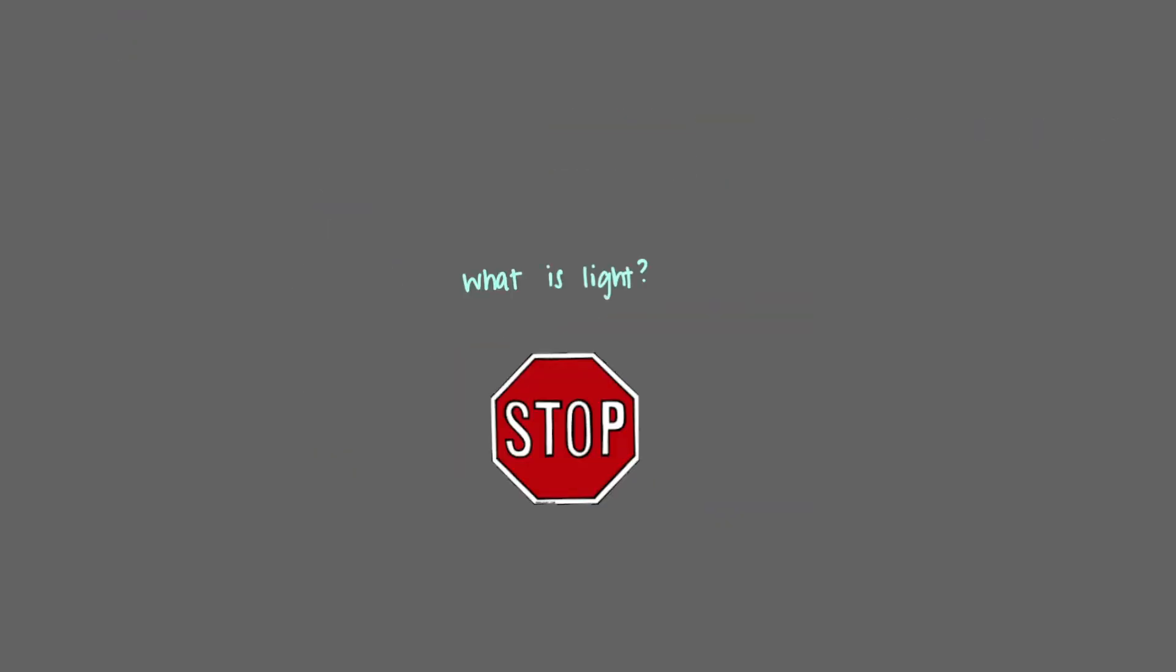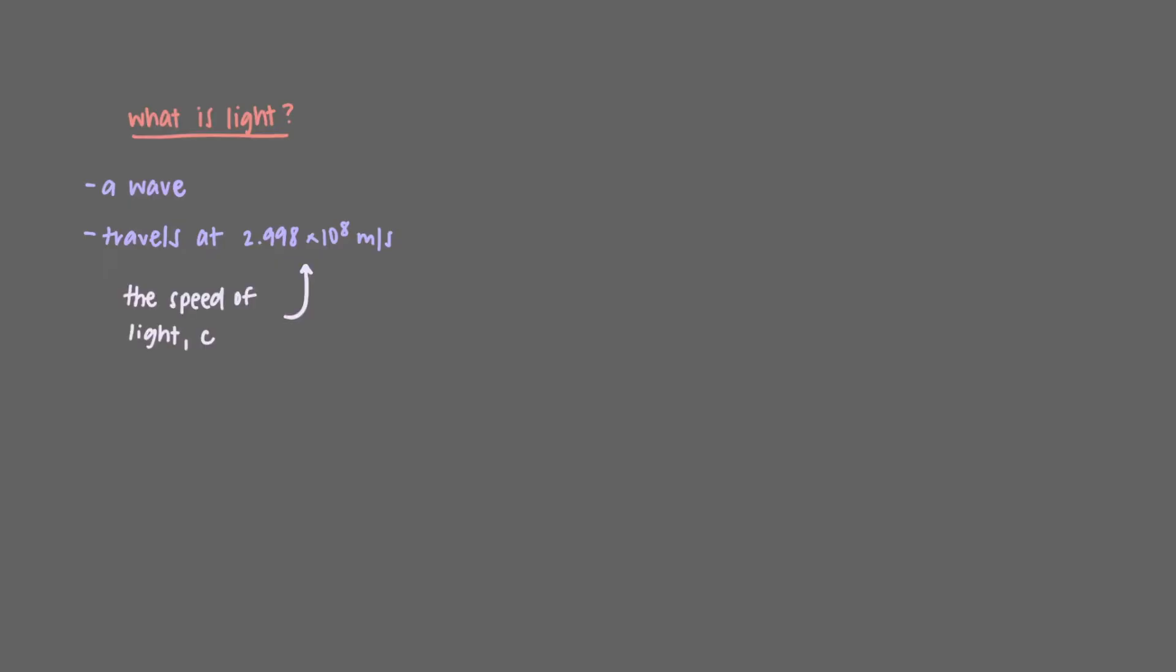So, what is light? Light is a wave that travels at a constant speed of 2.998 times 10 to the 8th meters per second, the speed of light, or c.